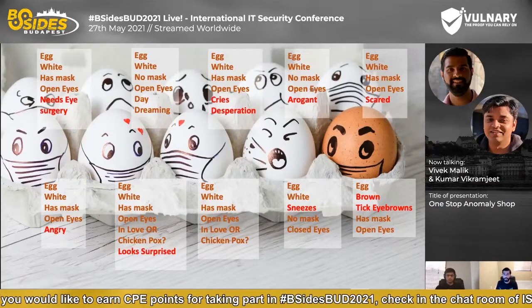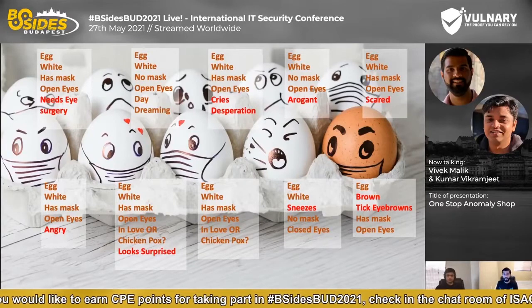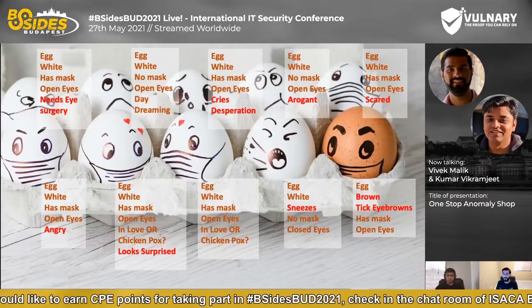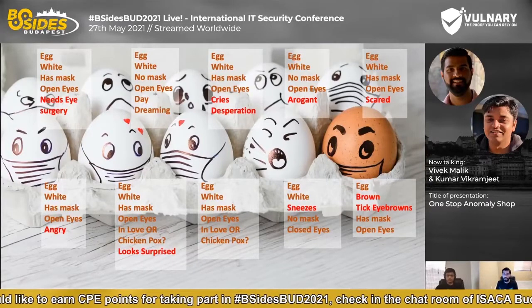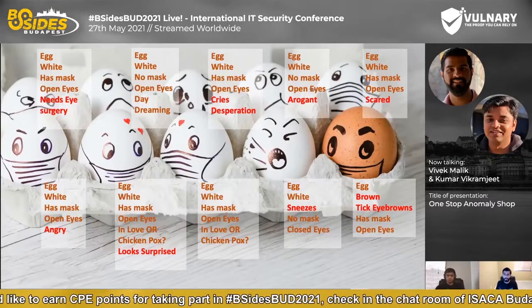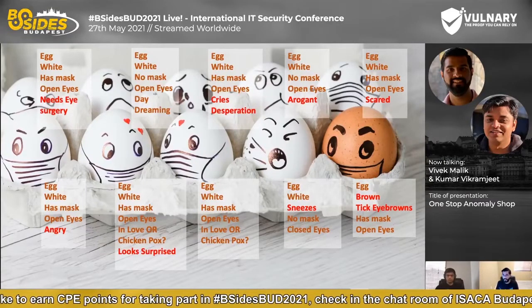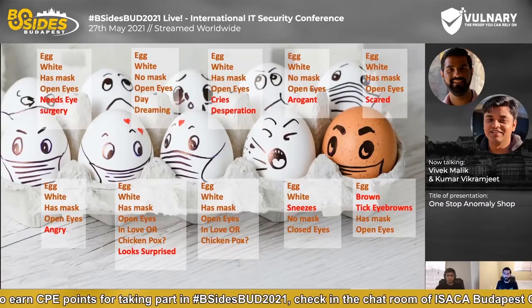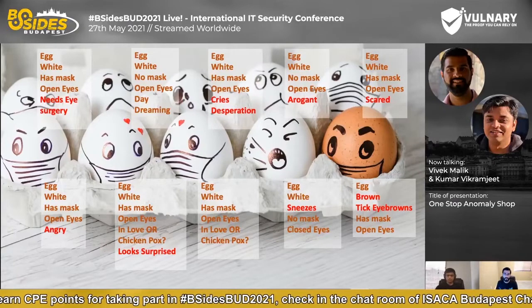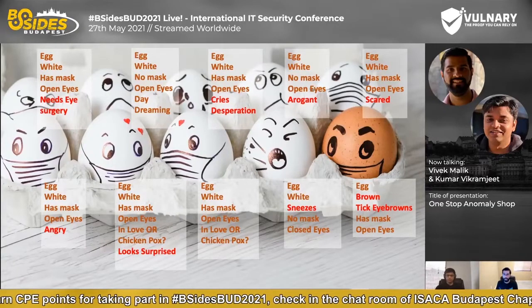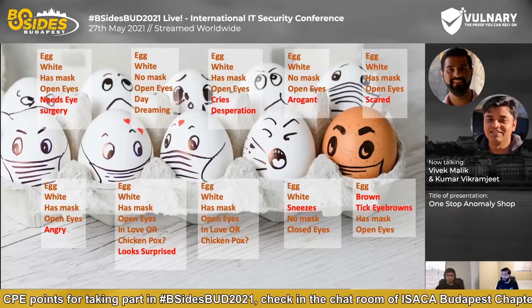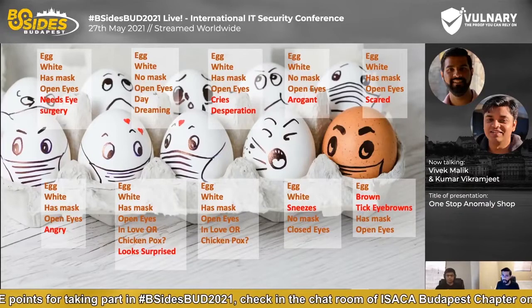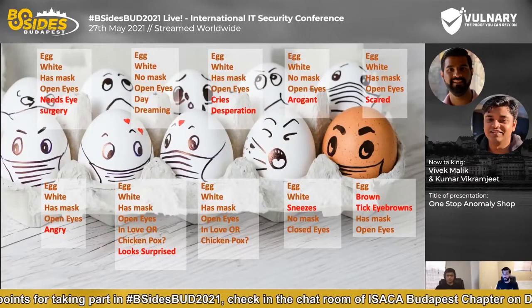For example, one egg is described as: white, has mask, open eyes, and needs eye surgery — that becomes the outcome of an algorithm. Similarly, another egg: white, has mask, open eyes, in love, or has maybe chicken pox, looks surprised. Another egg that is white, has mask, open eyes, but is an angry person — so probably that's the anomaly we are looking for. These are the labels we are trying to implement with the One-Stop Anomaly Shop.